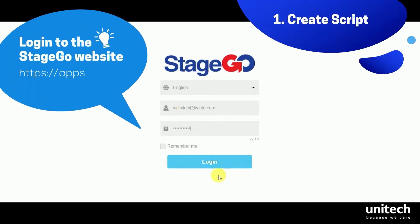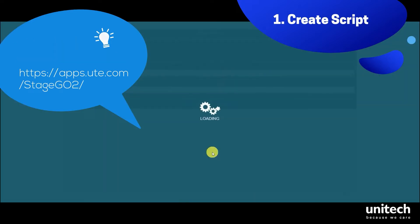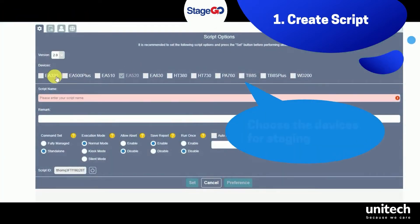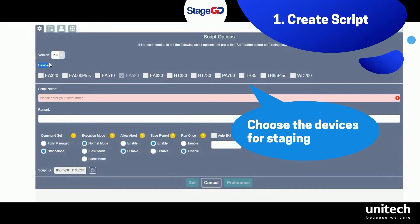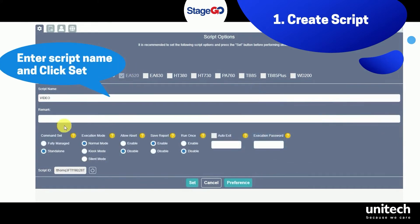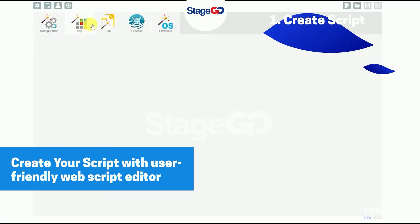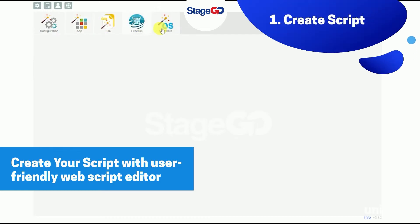First, use your StageGo account to sign in to the services. Choose the devices you want to set up. Enter your script name and click the Set button. On the Settings page, click Configuration.